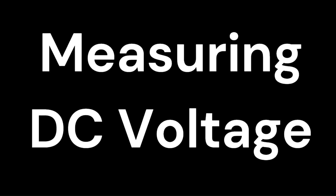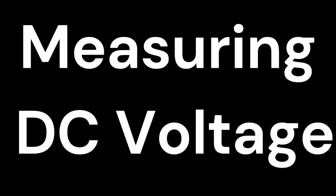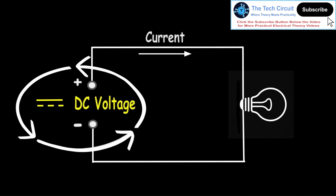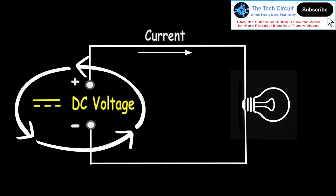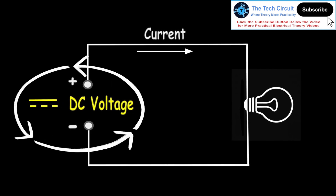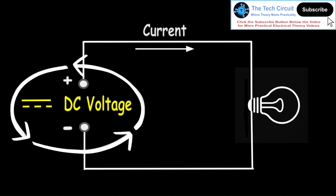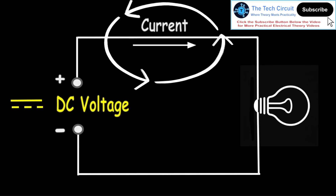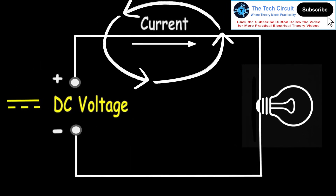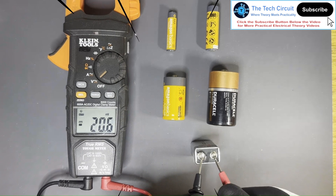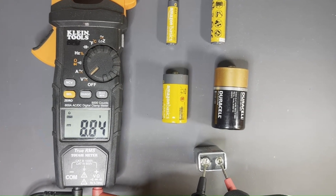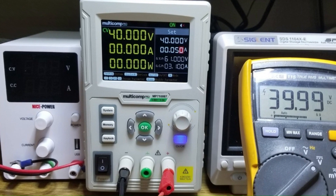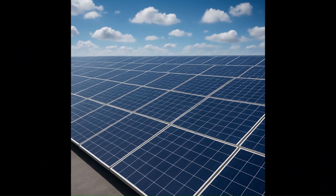Measuring DC voltage. DC, or direct current voltage, is a type of electrical voltage where the polarity and magnitude remain constant over time. In simple terms, the voltage stays the same and current flows in only one direction, from positive to negative. This is the type of voltage you would typically measure from batteries, DC power supplies, and even solar panels.